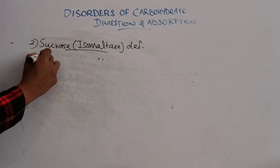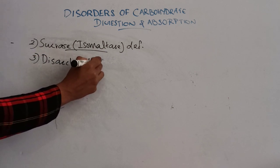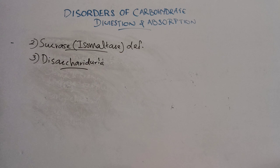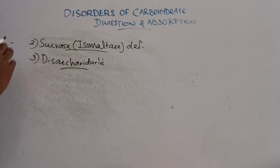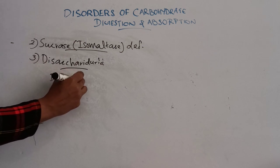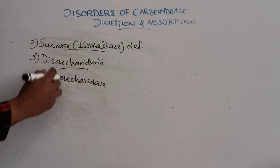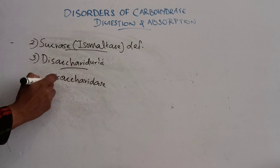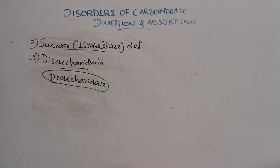Next one is disacchariduria. In some patients with disaccharidase deficiency, an increase in the excretion of disaccharides may be observed. This is called disacchariduria, and it is seen in patients with intestinal damage.